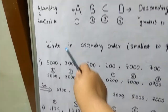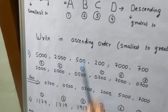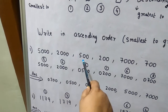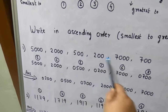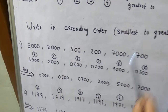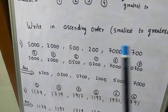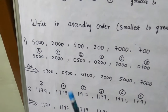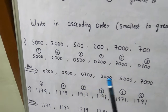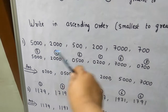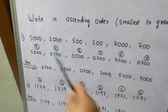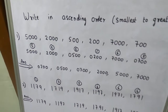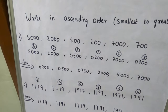Now see the question: write in ascending order. The numbers are 5000, 2500, 200, and 7700. First, what you have to do — count the numbers. See how many numbers are there: 1, 2, 3, 4, 5, 6. There are 6 numbers. The second rule is: check whether all the numbers are 4-digit numbers.